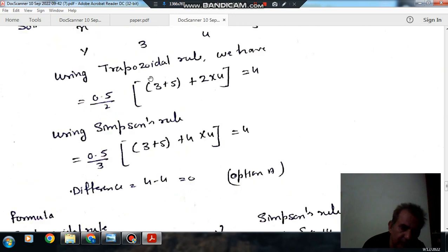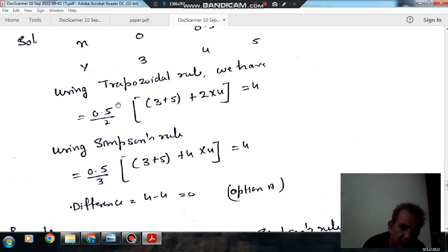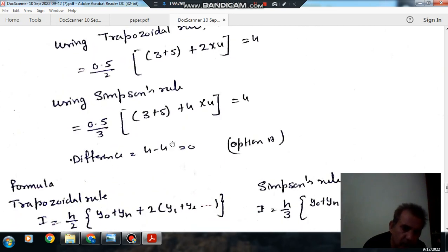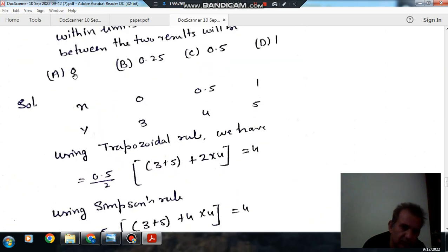By using both rules, we get the integral value as 4. So the difference is 4 minus 4 equals 0. The answer is 0.